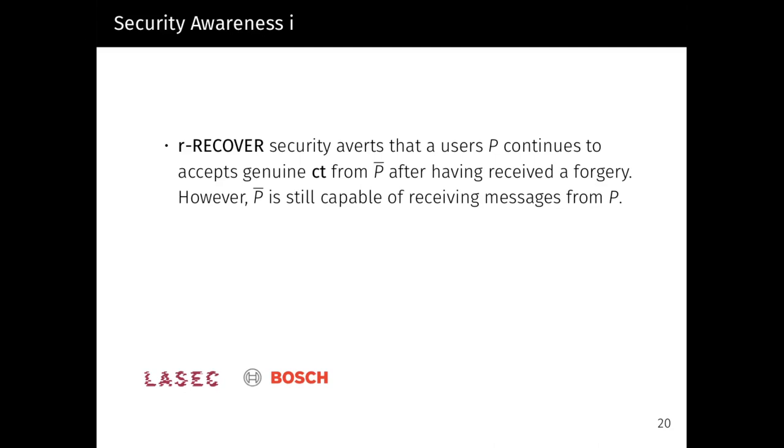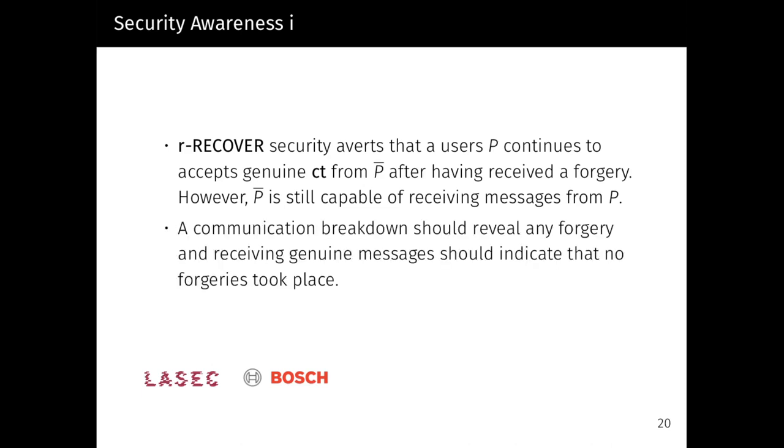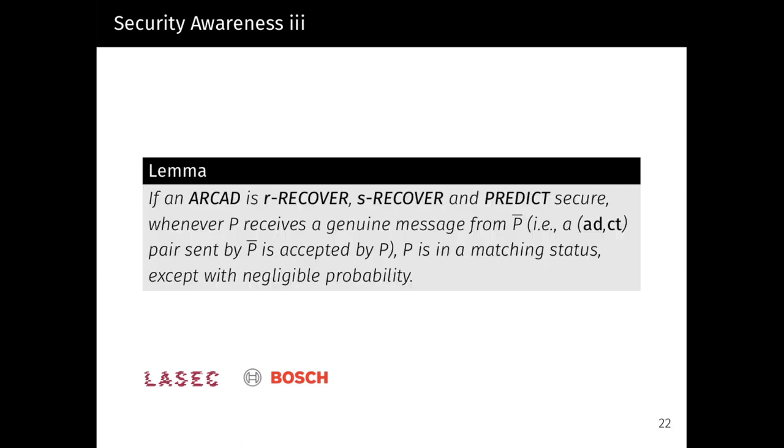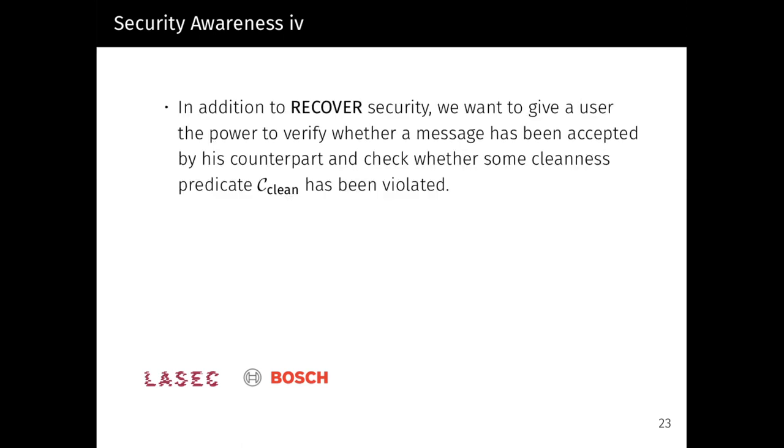As already indicated, r-RECOVER security averts that a user P continues to accept genuine ciphertext from its counterpart after having received a forgery. However, in this scenario, the user P-bar is still able to receive messages from P. However, we demand a complete breakdown of communication. A communication breakdown should reveal any forgery and receiving genuine messages should indicate that no forgeries took place. We capture this with the s-RECOVER security notion, whose game, or in whose game, the adversary attempts to make a user accept a message from another user that has received a forgery. The combination of r-RECOVER, s-RECOVER, and PREDICT security yields the following very useful result: If an RCAT is r-RECOVER, s-RECOVER, and PREDICT secure, whenever P receives a genuine message from P-bar, P is in a matching status except with negligible probability.